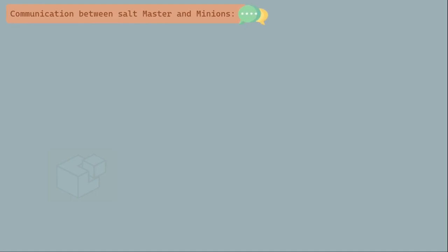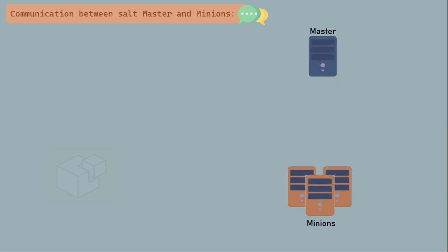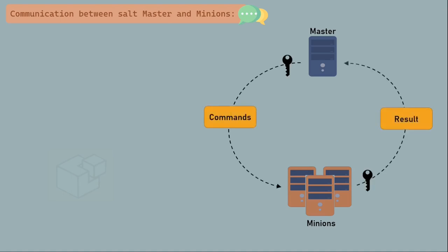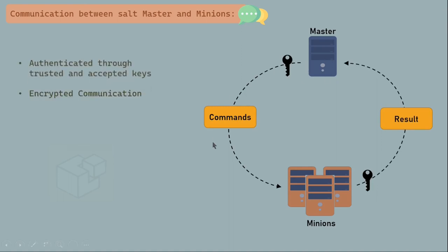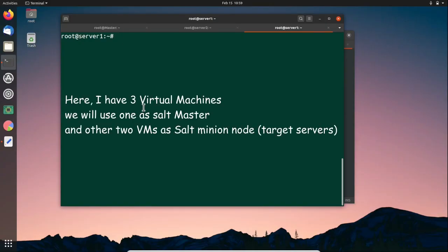Let's see how communication happens between the Salt master and minions. When a minion starts for the first time, it initiates a handshake and sends its public key to the Salt master. The key must be accepted on the master before any communication begins. All communication between the Salt master and minions is encrypted using AES keys — the master sends commands to minions and receives results back, both encrypted.